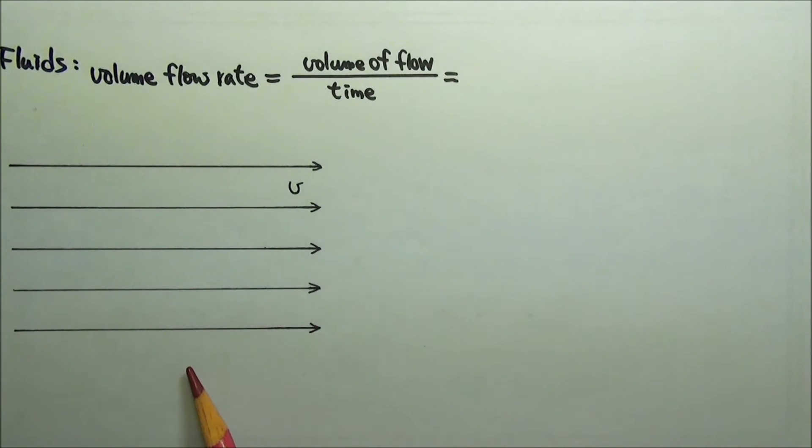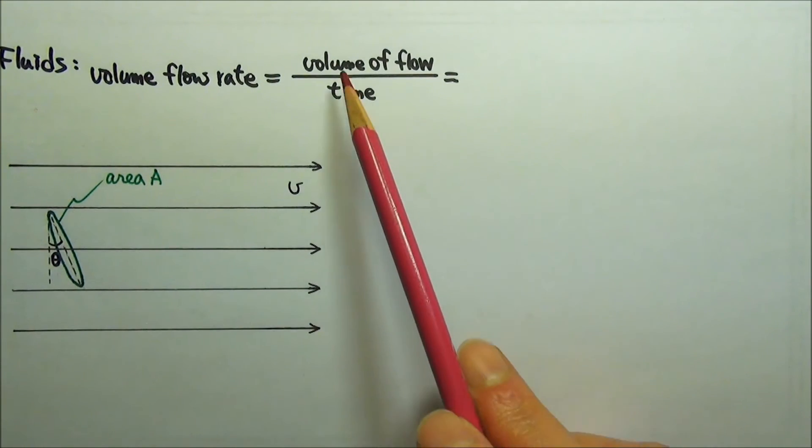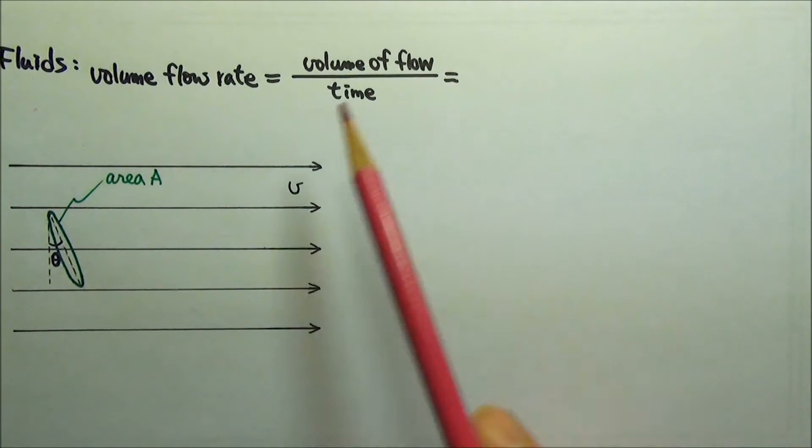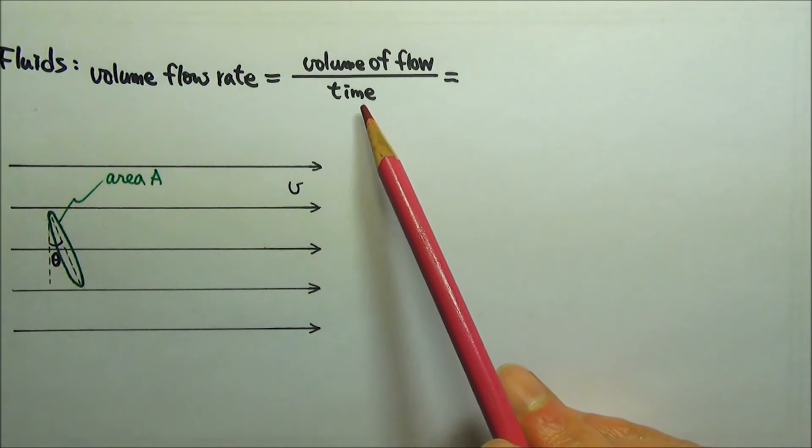Let's consider an incompressible fluid flowing to the right at velocity V in this region. Let's pretend that there is a ring of area A tilted like this in the flow and that the ring does not disturb the flow. The tilted angle is theta. What is the volume of fluid flow through this ring in a unit of time?